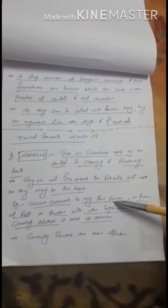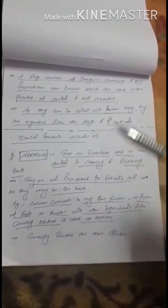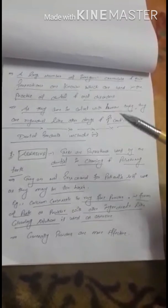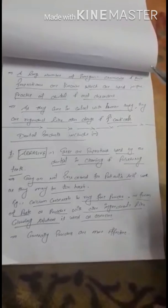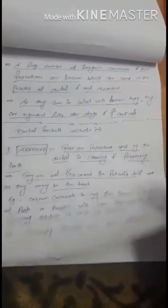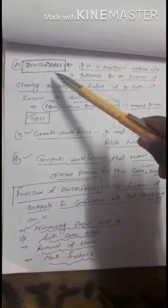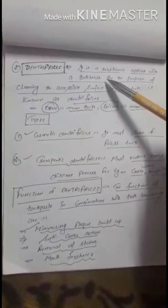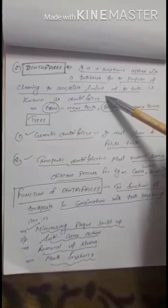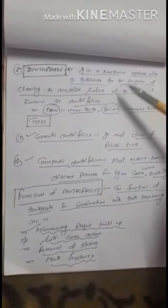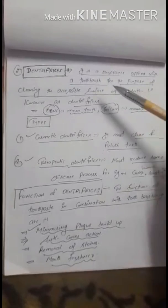For example, calcium carbonate in very fine powder form or as a paste with other ingredients like coloring solution is used as an abrasive. Generally, powders are more effective as compared to paste. The second term is dentifrice — dentifrice is a substance applied with a toothbrush for the purpose of cleaning the accessible surface of the teeth.